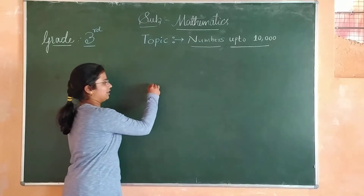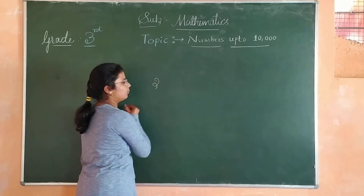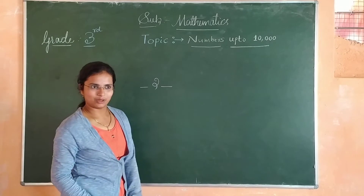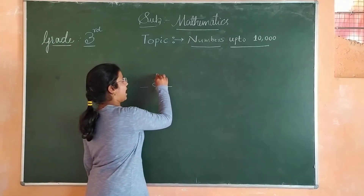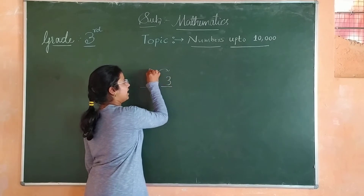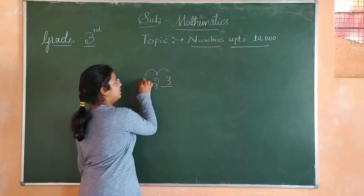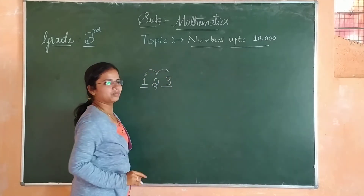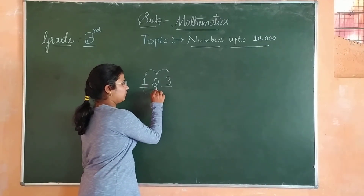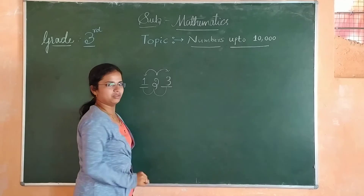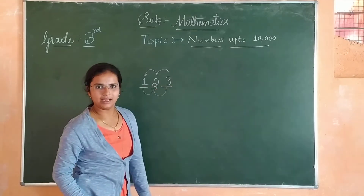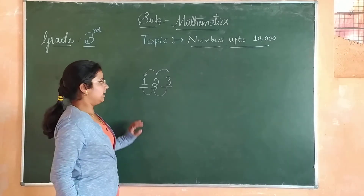If we are given a number like 2 and asked to write the after and before numbers: if we add 1 to this number, we get 3, and if we subtract 1 from this number, we get 1. So, 1 is the before number of 2, and 3 is the after number of 2, and 2 is the between number of 1 and 3.